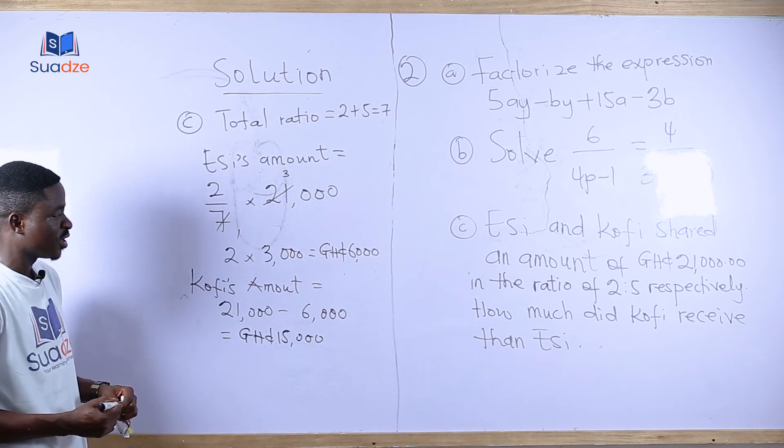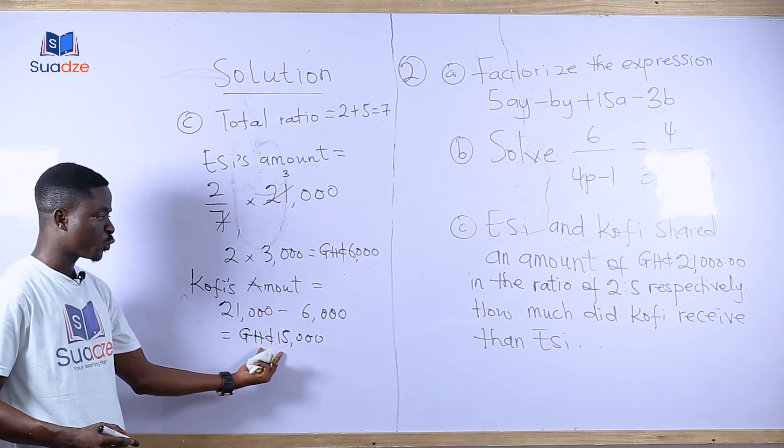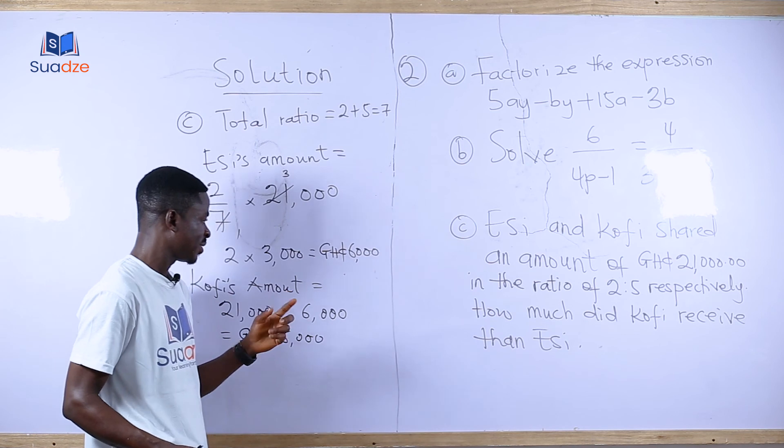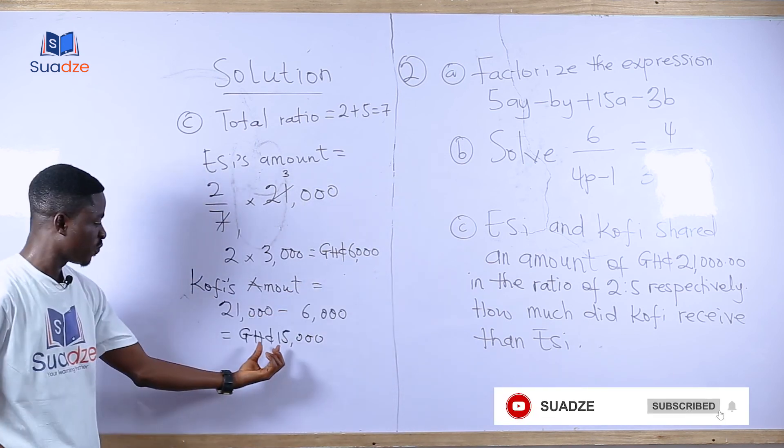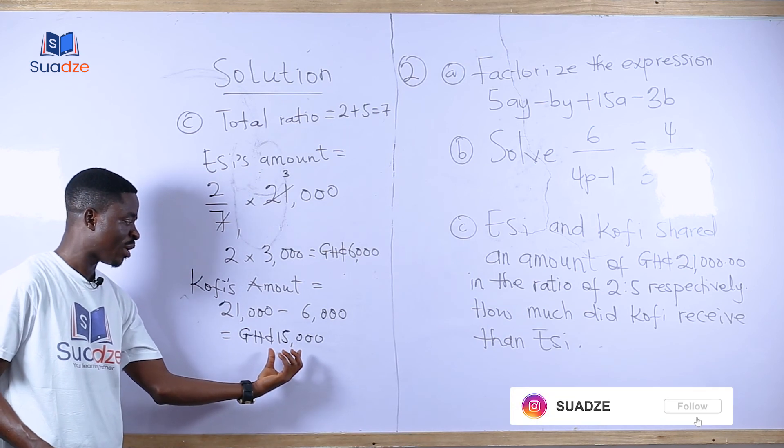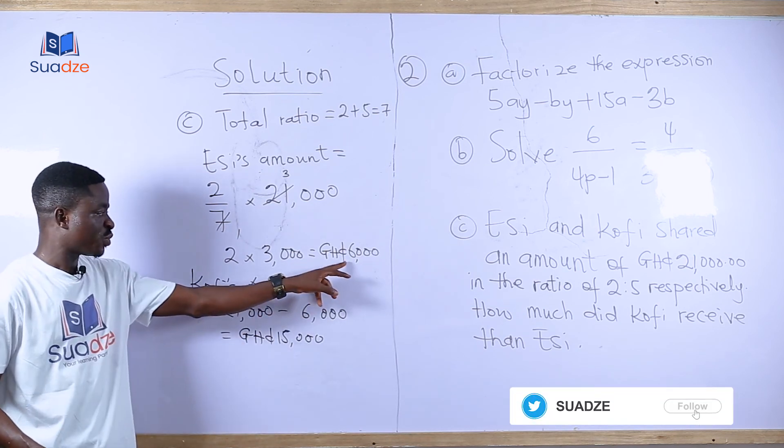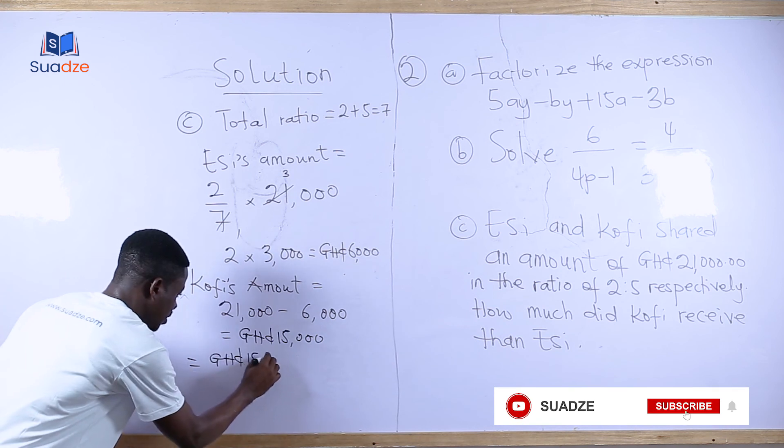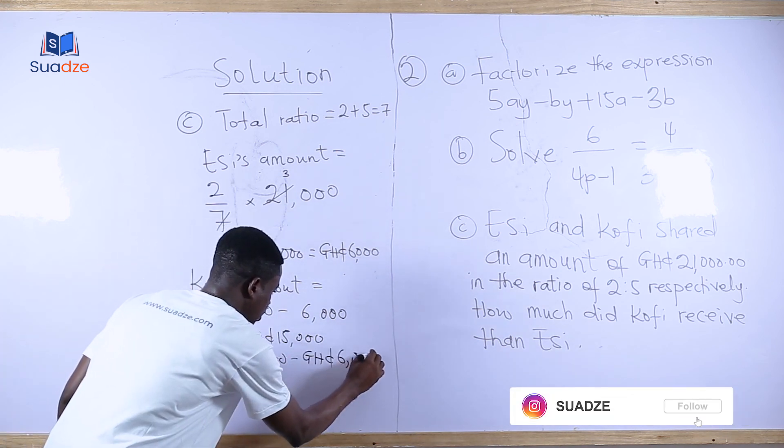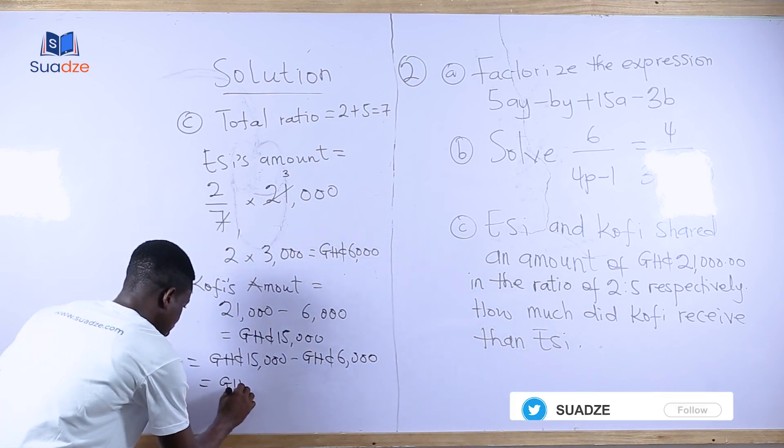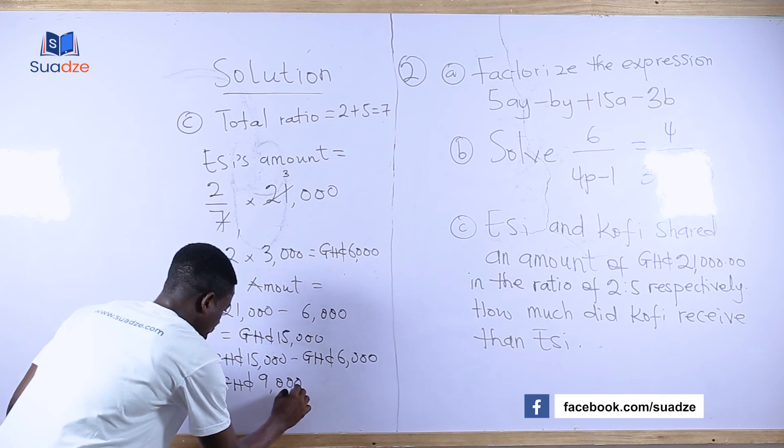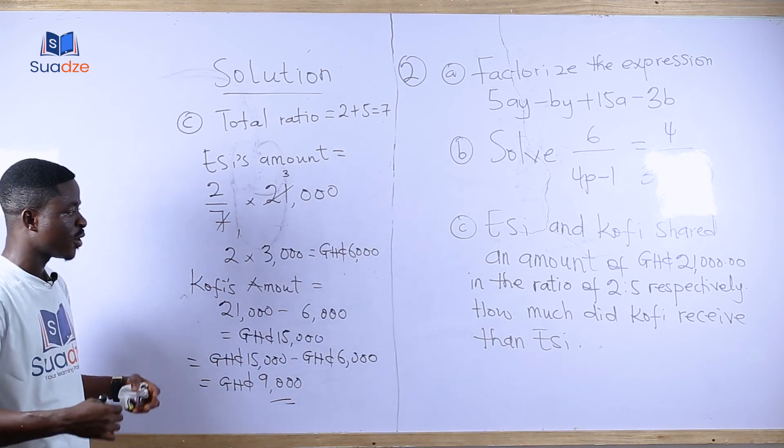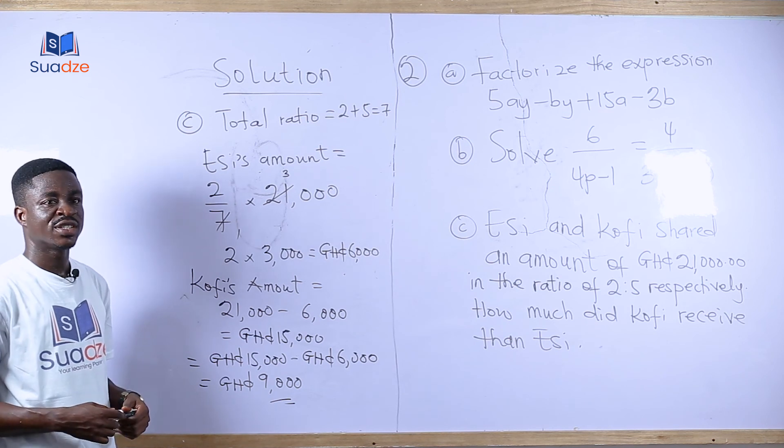But the question is not asking for the amount AC received or the amount Kofi received. The question says how much did Kofi receive than AC? Now AC received 6,000 and Kofi received 15,000. So we want to know the amount Kofi got more. We subtract AC's amount from Kofi's amount. This gives us 15,000 minus 6,000, which is 9,000. So Kofi received 9,000 more than AC. Now we are done with question 2.